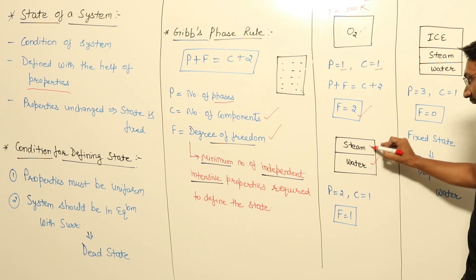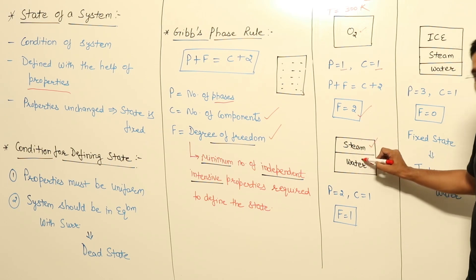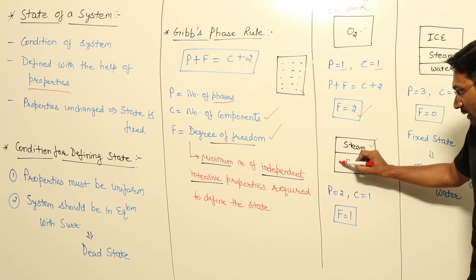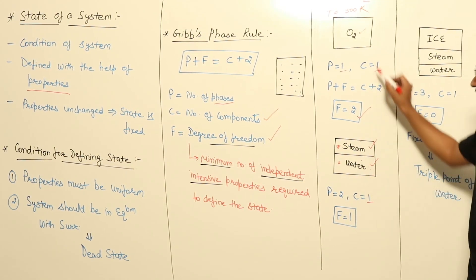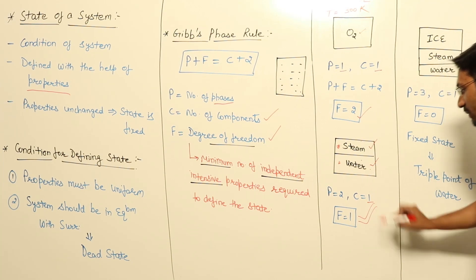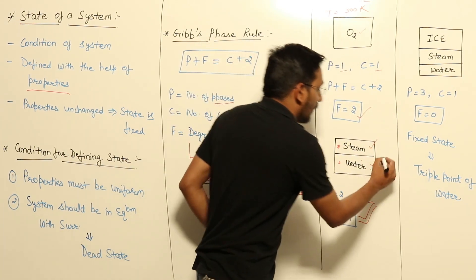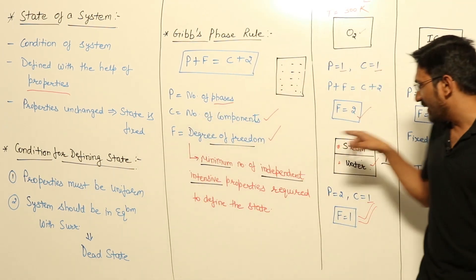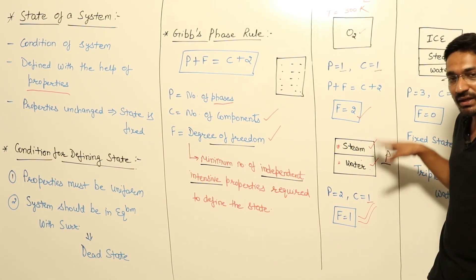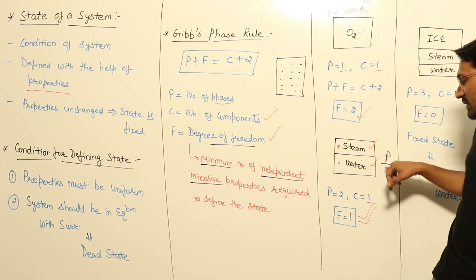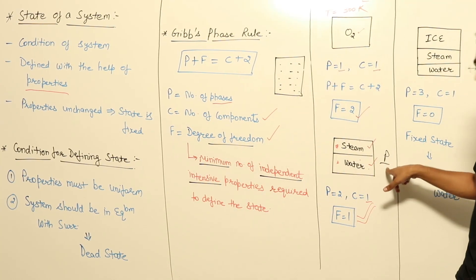Another example: suppose a beaker contains water in liquid form and steam in gaseous form. In this case, phases P=2 (liquid and gas) and component C=1 (water). Putting these into the formula gives degree of freedom F=1. This means only one independent intensive property — say, pressure — is enough to define the state of the system. With just pressure, I can calculate temperature, volume, enthalpy, entropy, and any other property.